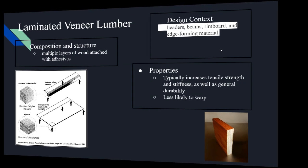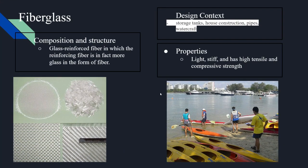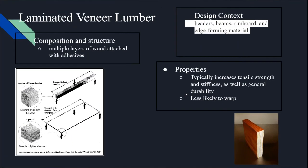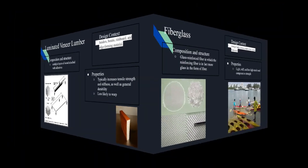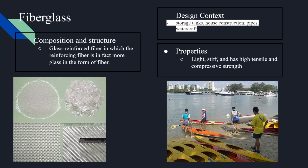Fiberglass — an example is a kayak made of fiberglass. It is light, stiff, and has both high tensile strength and compressive strength, which makes it particularly useful. Fiberglass is a reinforced fiber where the reinforcement fiber is glass in the form of fiber. It can be used for storage tanks, house construction, pipes, and watercraft.